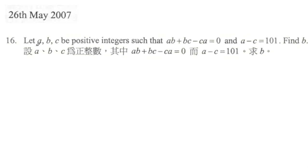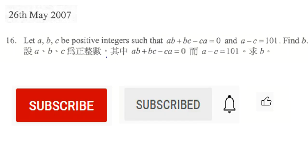We are going to solve this problem from Hong Kong Mathematical Olympiad. It says let A, B, and C be positive integers such that AB plus BC minus CA equals 0 and A minus C equals 101. Find B. Before solving the problem, thanks for the like, subscribing, and turning on notification.